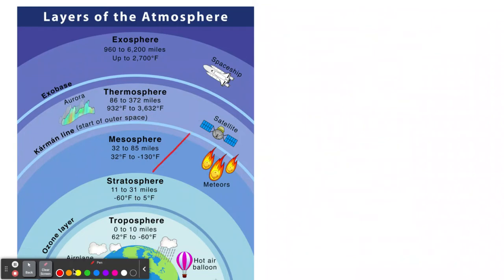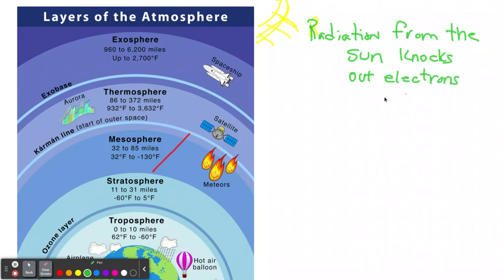So if we want to draw a sun, there's a little sun. The radiation from the sun does something to the atoms. It knocks out electrons. And if it knocks out electrons from their atoms, you're going to get ions. So let's bring out a picture of an oxygen atom.